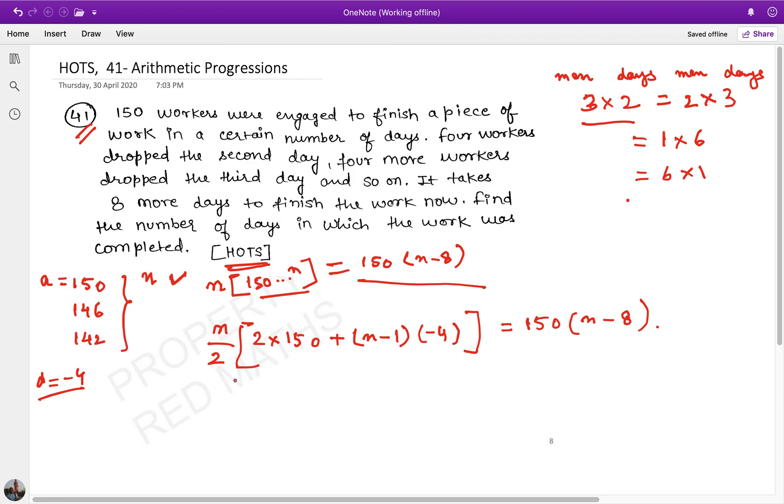Now this is the equation. This is the most important challenge with this type of question - forming the equation. Once you understand how to form this equation, solving it becomes easy. Here we have calculated 150 people working for n minus 8 days. We have equated this, now let's solve it.